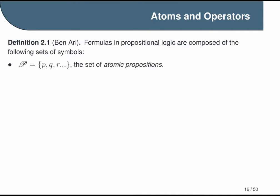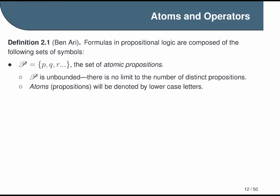First, we have an infinite set of variables, which we call the atomic propositions, denoted here by a fancy capital P. This is an unbounded set, meaning there's no limit to the number of variables you can use. If you're worried about running out of letters, you can use subscripts. We refer to the individual variables in this set as atoms, and by convention, we'll write them with lowercase letters.